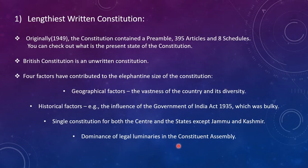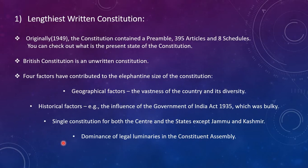The fourth factor is the dominance of legal luminaries in the Constituent Assembly. The assembly that formed our constitution was mainly composed of legal luminaries — lawyers. They contributed greatly to making the constitution lengthy because being lawyers, they included many small points and issues into the constitution. That is why our constitution has become one of the lengthiest written constitutions.